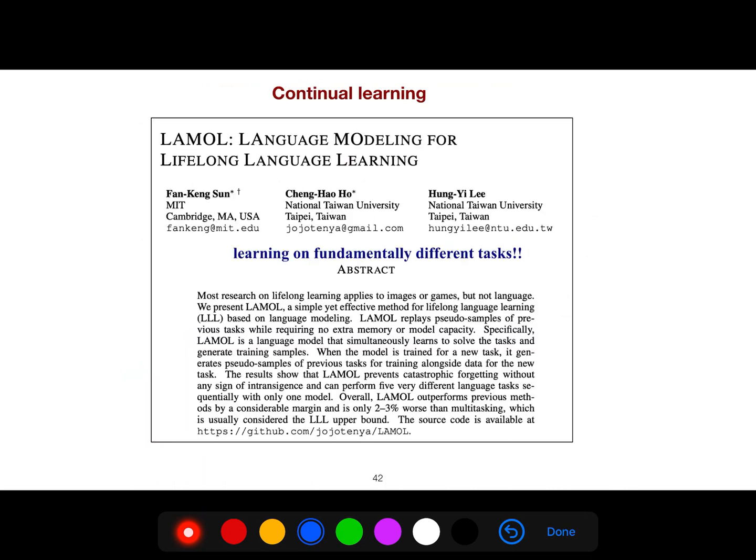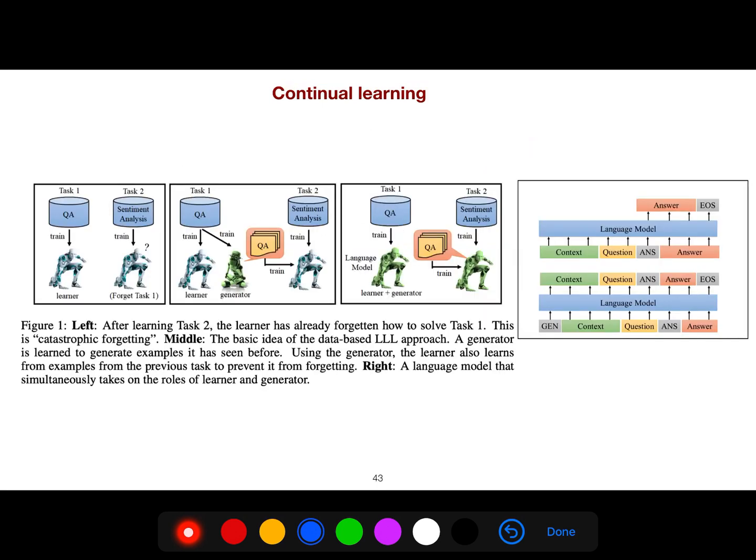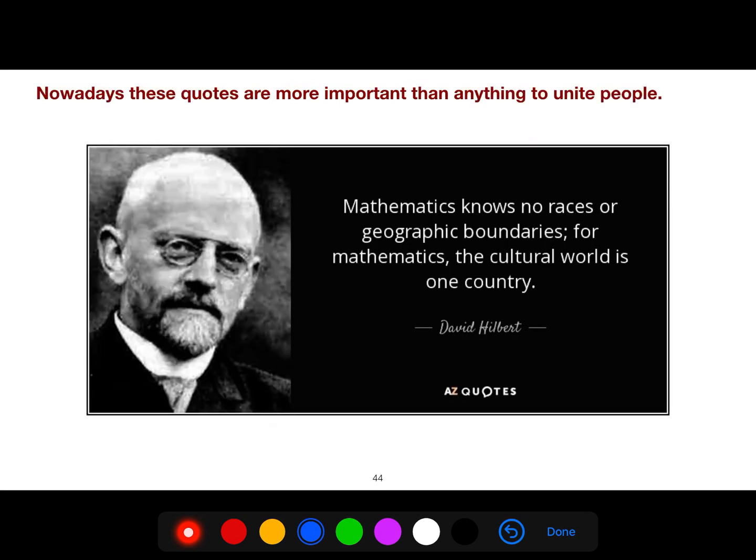And continual learning. This is a great article. As I said, LAML—learning on fundamentally different tasks. So the task could be really very, very different from each other. And you have a generator. And of course, Hilbert says mathematics knows no races or geographic boundaries. For mathematics, the cultural world is one country.